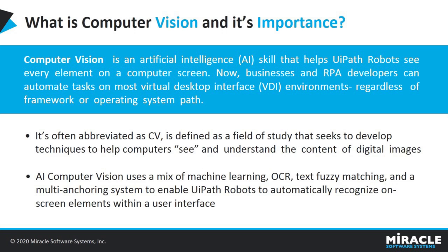In this slide, I'm going to discuss about Computer Vision and its importance. As we know, a robot needs to be able to see everything we are automating. So what do we do about on-screen elements that are invisible to robots? AI Computer Vision solves this problem — it helps UiPath robots to see every element on the screen, and we can even automate tasks on VDI environments regardless of their frameworks.